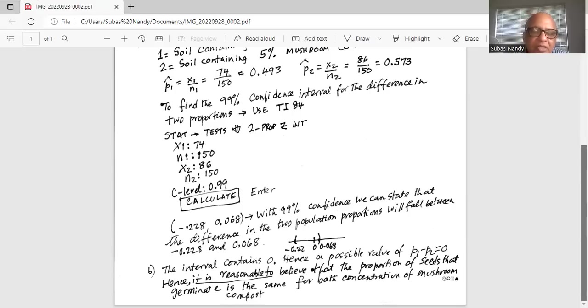Let's look at the 99 percent confidence interval, lower boundary of minus 0.228 and the upper boundary is 0.068. Notice this 99 percent confidence interval contains zero.